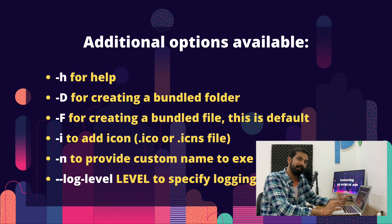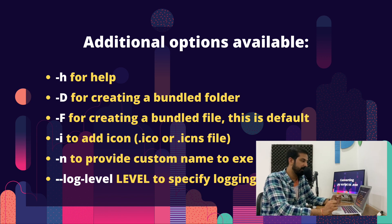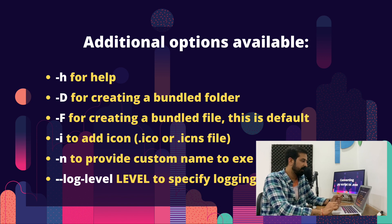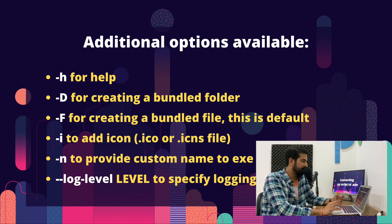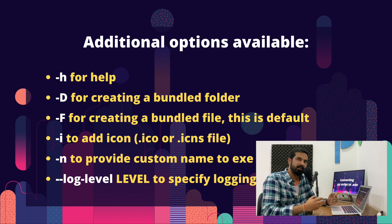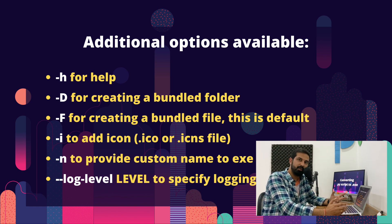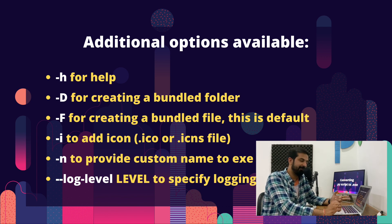To provide a custom icon for your .exe file, use the -i argument and provide an icon file — .ico format for Windows, and .icns for macOS. The -n argument provides a custom name to your .exe file; by default it takes the name of the script provided. The --log-level argument can be used to debug the conversion process by setting the log level to DEBUG.